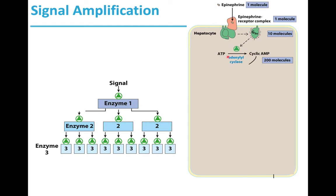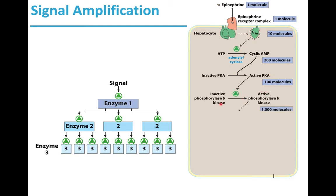This results in the activation of adenylyl cyclase, which converts ATP to cyclic AMP. At least 200 molecules of cyclic AMP are produced. This results in the activation of protein kinase A — cyclic AMP activates PKA, and at least 100 molecules of PKA are activated. PKA further activates phosphorylase B kinase, and thousands of molecules of phosphorylase B kinase are activated by PKA.